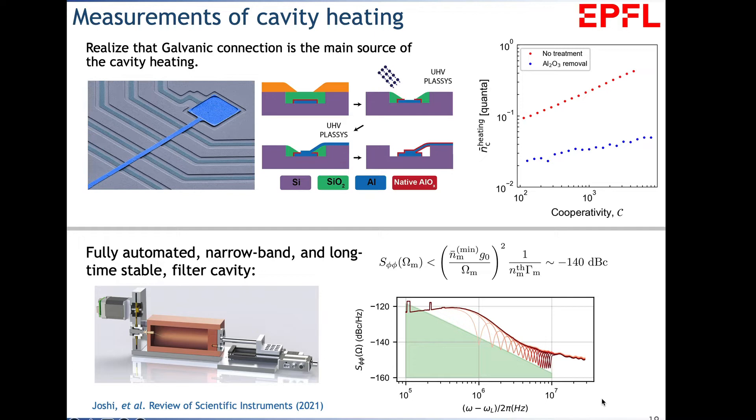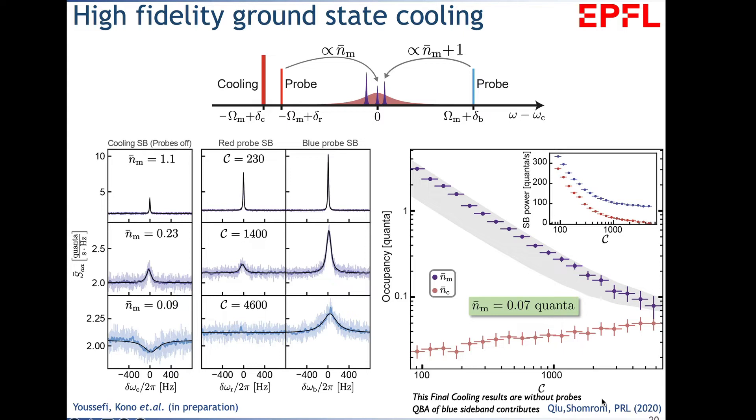With these techniques in place, these very high mechanical quality factors allow very efficient cooling. We take the cooling tone and two probe sidebands, see the N and N plus one scattering. As we pump strongly, taking cooperativity from 200 to about 4,000, you see sideband asymmetry appear. If you pump too hard, you see squashing on the pump laser and heating up. From this, we obtain minimum occupancy of about 0.07, limited by cavity heating. We can prepare these highly coherent mechanical systems very close to mechanical ground state.